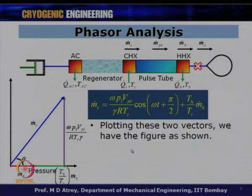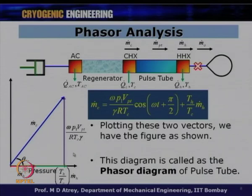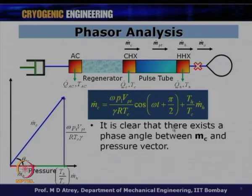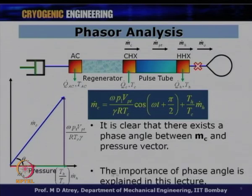It is clear that vector ṁ_C is the sum of two vectors at 90 degrees to each other. The phasor diagram shows ṁ_C = (TH/TC)·ṁ_H (horizontal) plus a vertical quantity, giving an angle θ between ṁ_C and the pressure axis. This diagram is called the phasor diagram of the pulse tube. The hot end mass flow rate ṁ_H is in phase with the pressure vector, and there exists a phase angle between ṁ_C and the pressure vector.